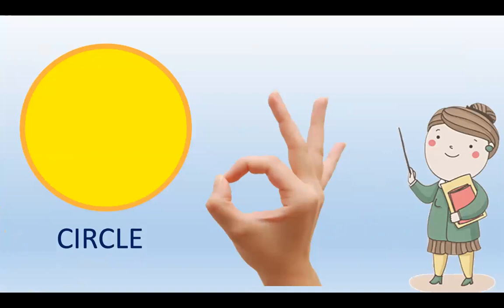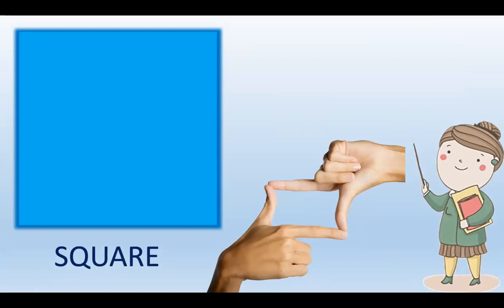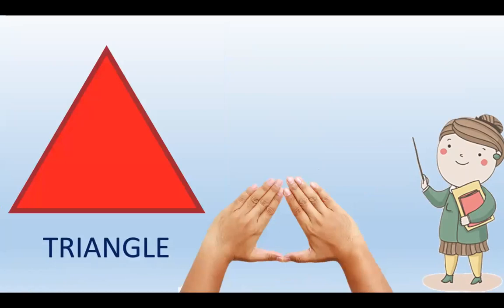Look at this picture. What shape is it? Now listen and repeat. Circle. The next shape — what is it? Square. Square. You can make a square like this. The last one. Triangle. Triangle.